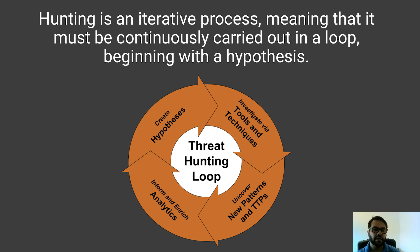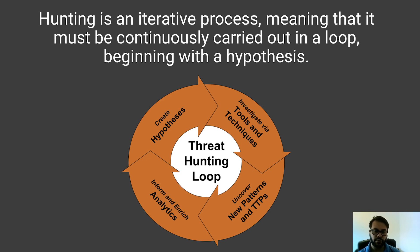Let's take a real-world example to illustrate this. Imagine a scenario where you see outbound traffic from a machine in your internal network communicating with an internet server on port 443. After some investigation, you see that this external host was reported as a command-and-control server of a ransomware group.